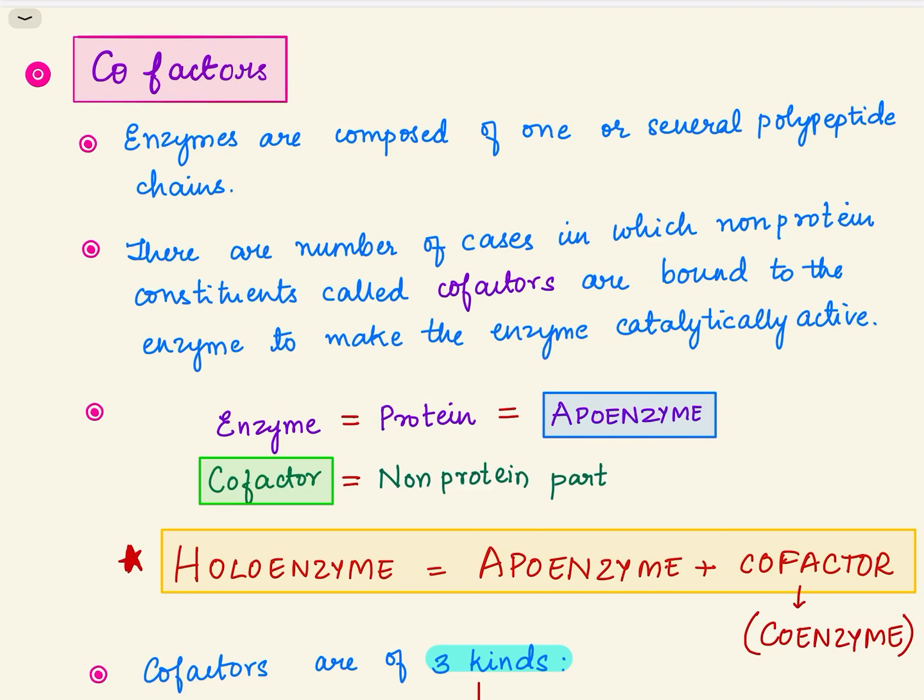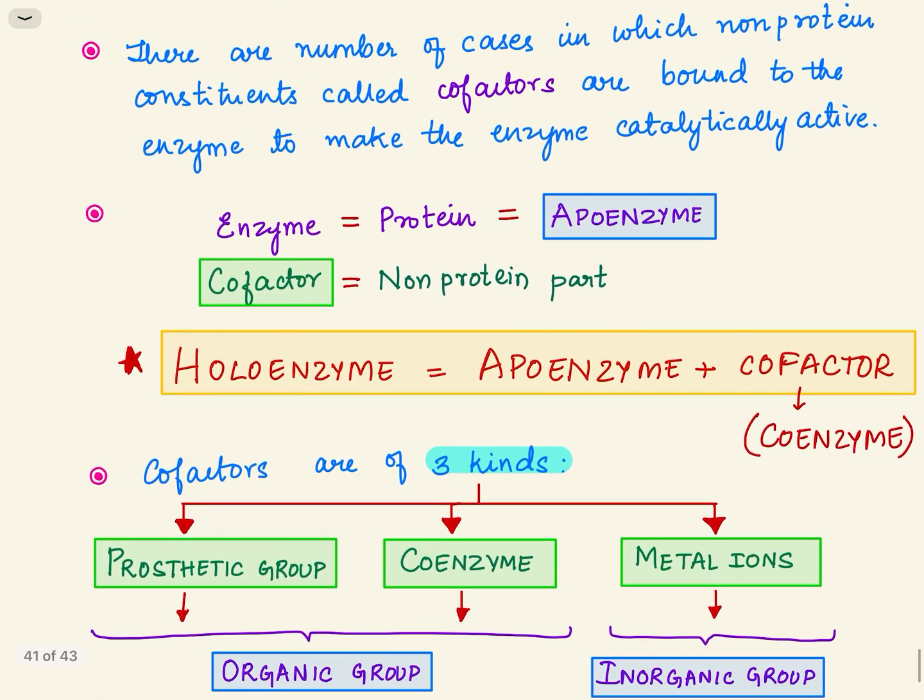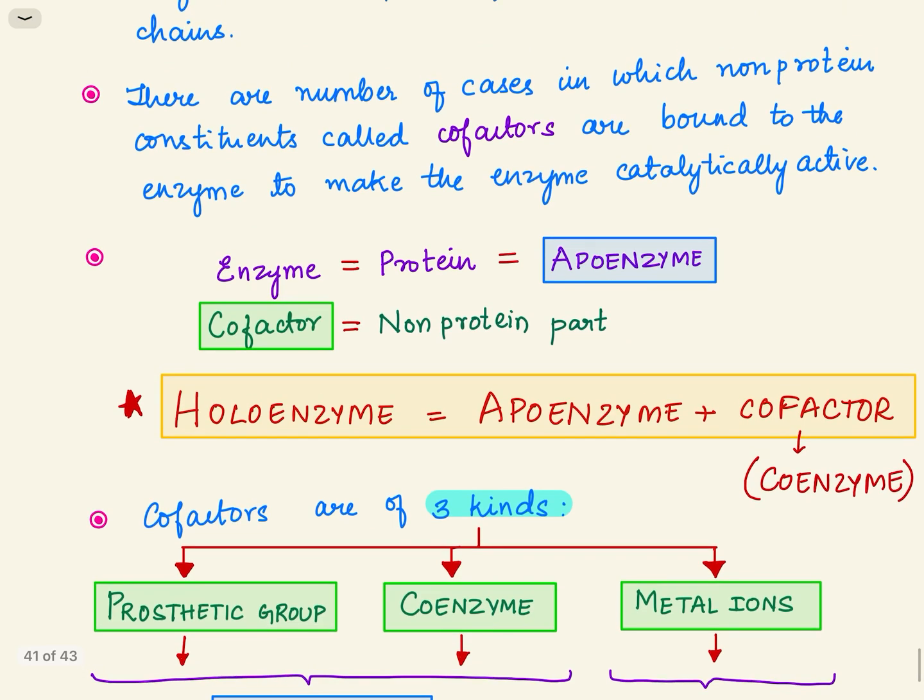Enzyme is nothing but protein and it's also called apoenzyme. Cofactor is a non-protein part. So holoenzyme refers to apoenzyme along with a cofactor - the protein part along with the non-protein part together is called holoenzyme.